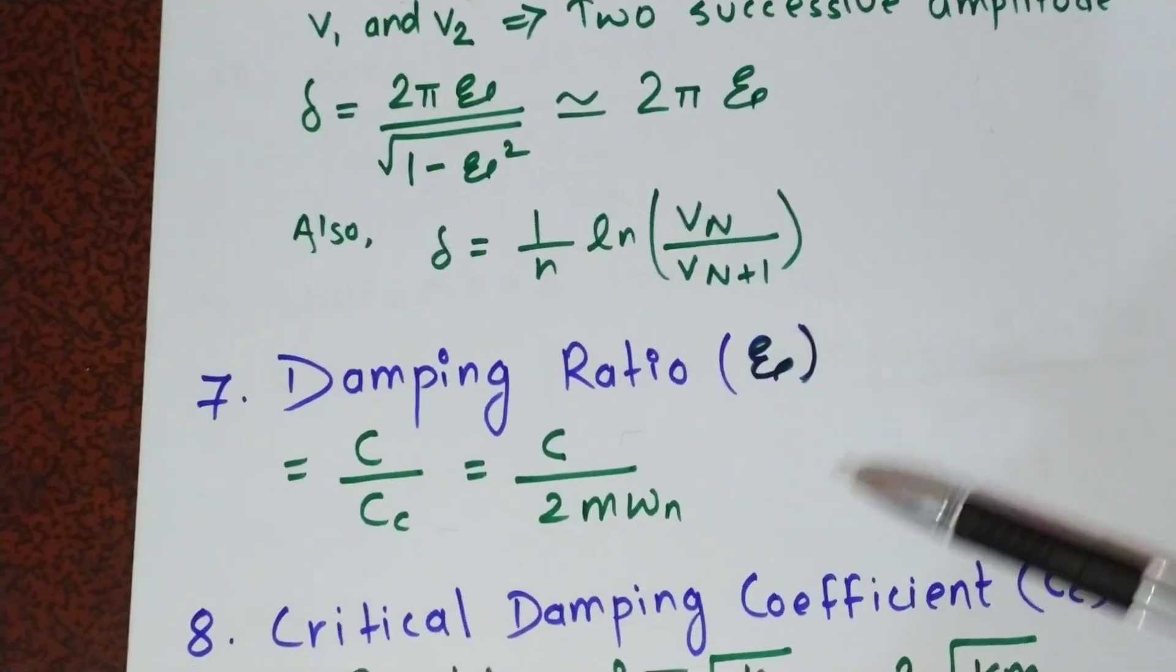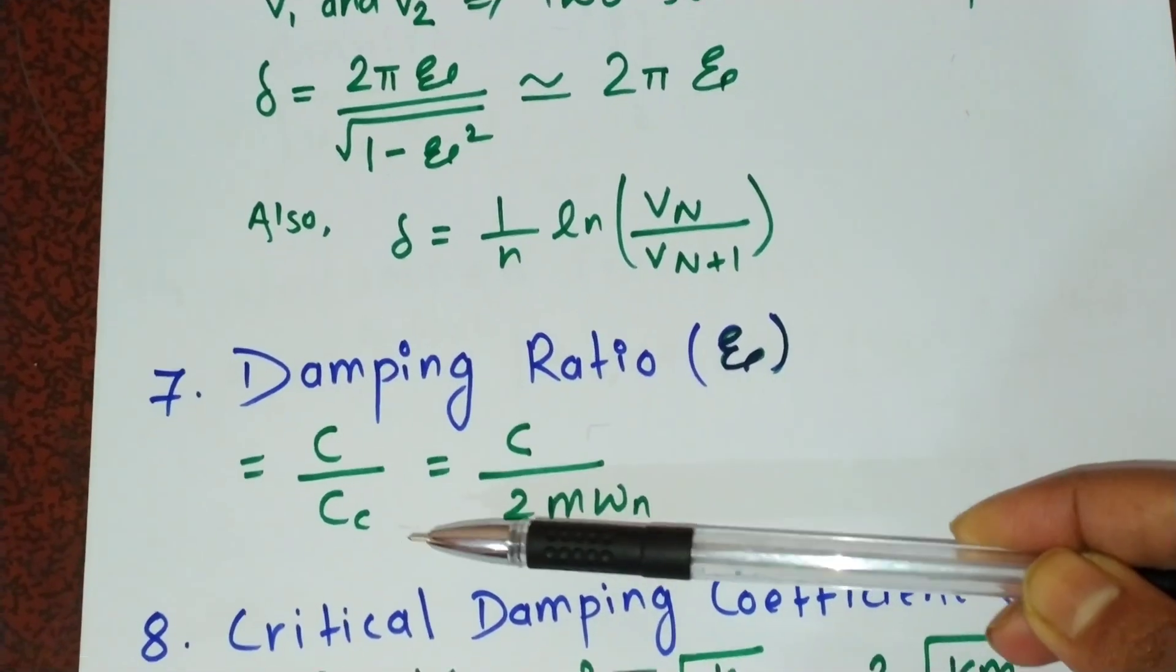Coming to the damping ratio ξ, it equals c by cc, where c is the damping coefficient and cc is the critical damping coefficient which equals 2m wn. On solving and putting the value of wn, we get 2 root km.